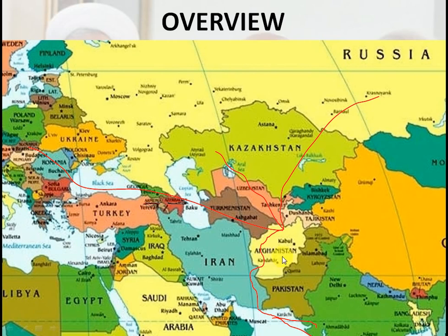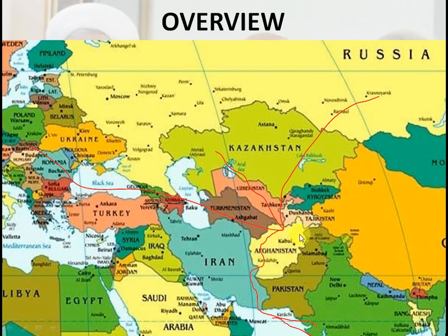In Afghanistan, there is a lot of insurgency because the Haqqani Network, which has been established by Pakistan, has caused instability. Afghanistan is a connector to all countries, so its development is important. Moreover, Afghanistan has abundant minerals, but because of the insurgency the minerals are still untapped and have not been excavated.